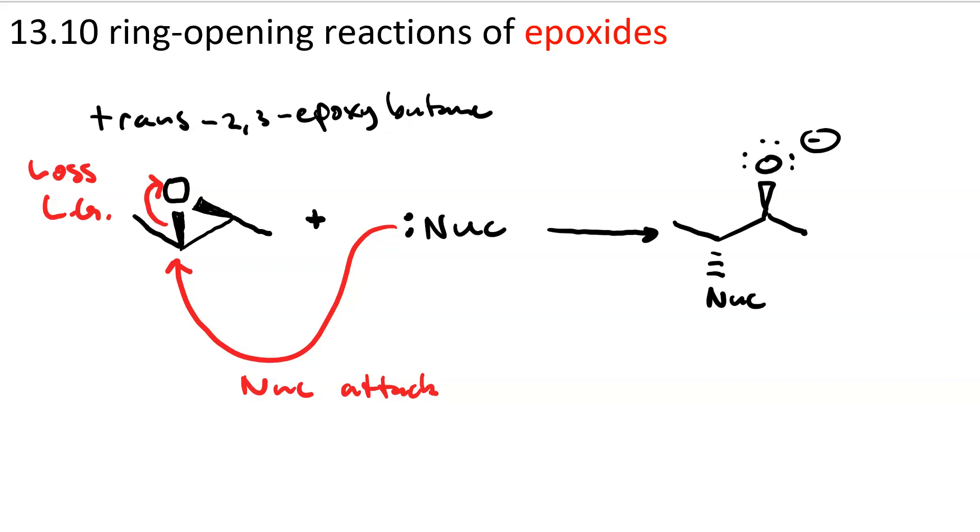So you end up with a product where the nucleophile has added vicinal to the alkoxide that is created. Now we know that alkoxides are terrible leaving groups, given that there must be something about the epoxide that makes this happen despite the fact that the leaving group is awful.